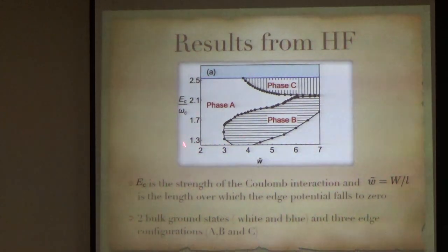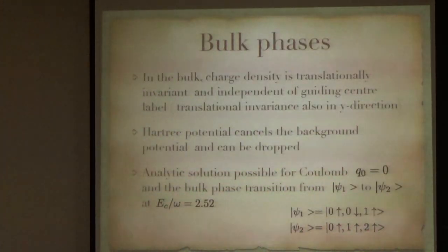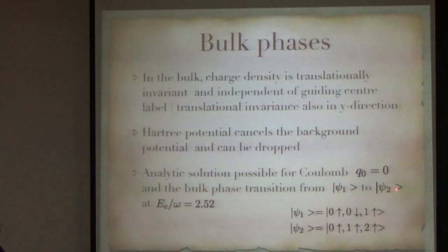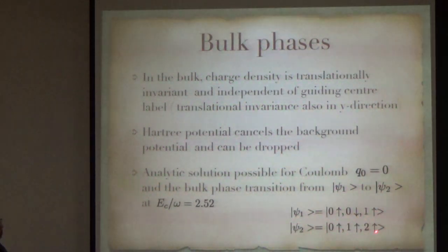Most of what we will do is in this region. Now we look at the edge phases and I am claiming that there are three edge phases, phase A, phase B and phase C. So, as I said, in the bulk phases, there is a bulk phase transition from psi 1 to psi 2. Psi 1 is 0 up, 0 down, 1 up and psi 2 is 0 up, 1 up, 2 up. So, that happens at this phase.